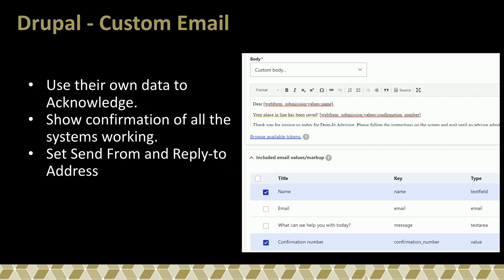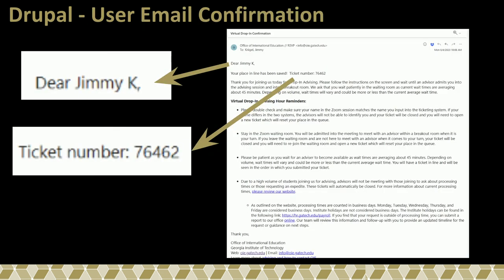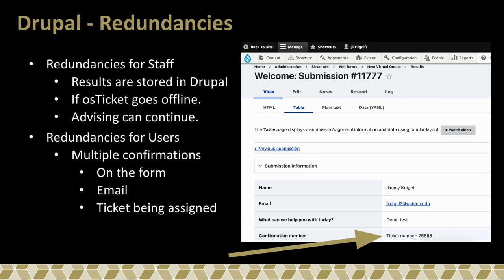We also set custom send-from and reply-to addresses so in case they're waiting too long or need to escalate, they can just reply and we have someone dedicated to watch during those times for any escalation issues. The confirmation shows a real ticket number that they can look up on our other site to see they're in the queue. We have the website, the ticketing system, and Zoom to tie those pieces together, making it easy for students to navigate since they just need to go into Zoom and get the help they need.